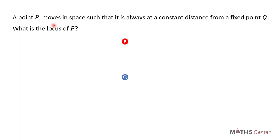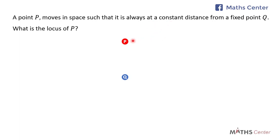Point P moves in space such that it is always at a constant distance from a fixed point K. Point K is a fixed point — it does not move — but point P can move. It will only move under a given condition, and the condition is that it should be at a constant distance from point K. The question wants us to find the locus of point P, or the path that point P will follow as it moves.